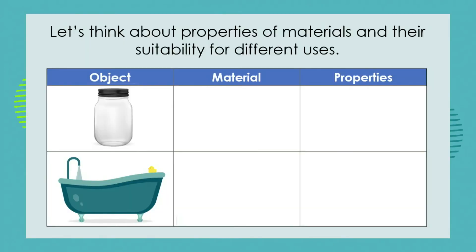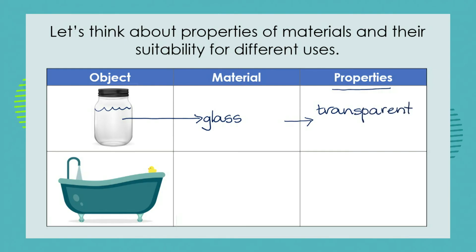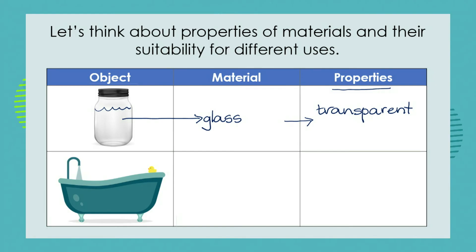Try this one yourselves. What is the material, and is it suitable for its function due to the properties that it has? Well, the material is glass. What properties make it suitable for containing honey, jam or peanut butter? First, it's transparent — we can see through it, so we are able to see what is inside the jar. We also know, however, that it's fragile, so we need to be very careful that we don't drop the jar.